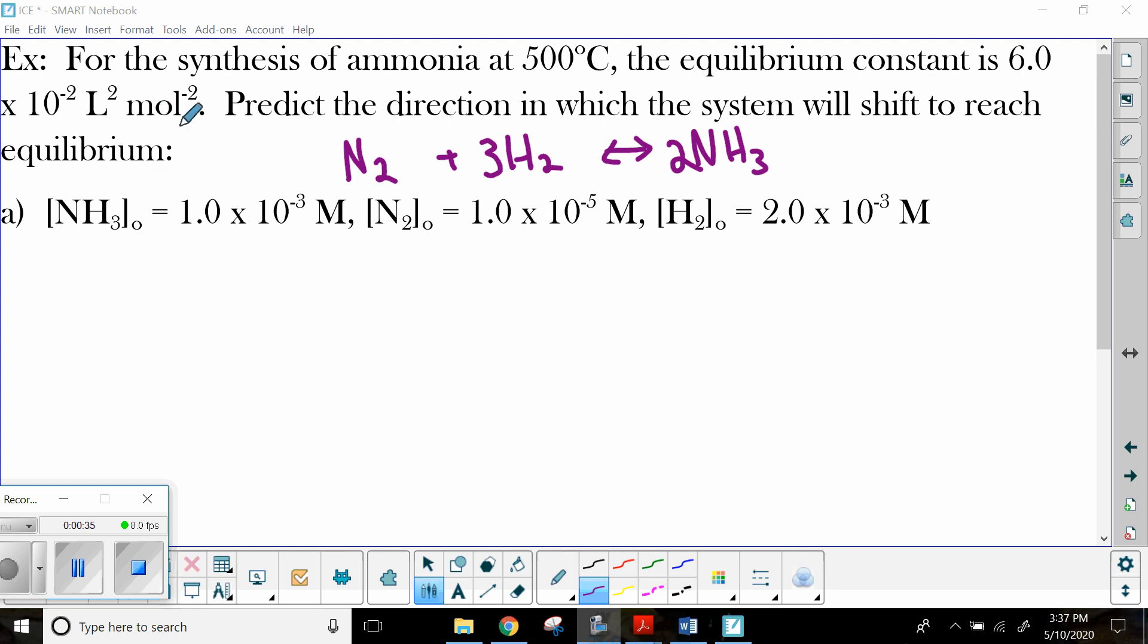We'll talk about how we get those units a little bit later. So I need to predict which direction this system will shift with these initial concentrations. Notice when I am giving you these initial concentrations, there's that little zero there, that's called a knot, as in an Irish knot. So what that means is you've got an initial concentration.